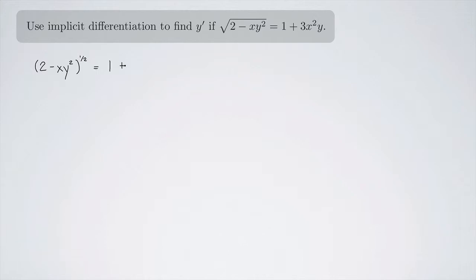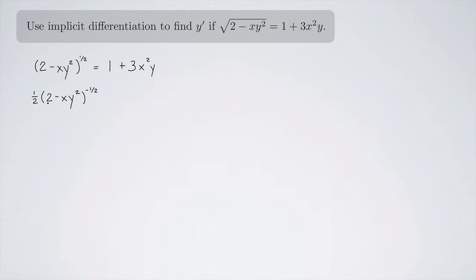That's going to equal 1 plus 3x squared y. So first, if we're going to take the derivative of a square root, this is chain rule — we're going to take the derivative of the square root itself and leave the inside the same. The outside function here is the square root, so we take the derivative of the outside first. Now we're going to multiply it times the derivative of the inside. The derivative of 2 — that's a constant, that's just going to be 0 — so we have this minus xy squared.